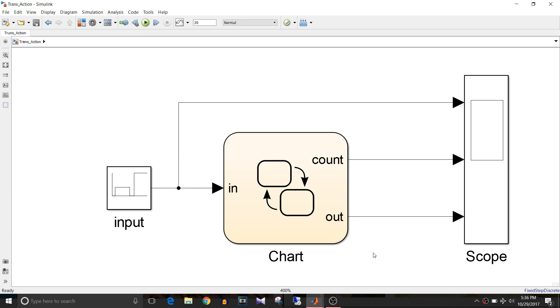Let's get started with today's example. In this model I am giving input from this repeating sequence stair block and the output will be displayed on the scope.